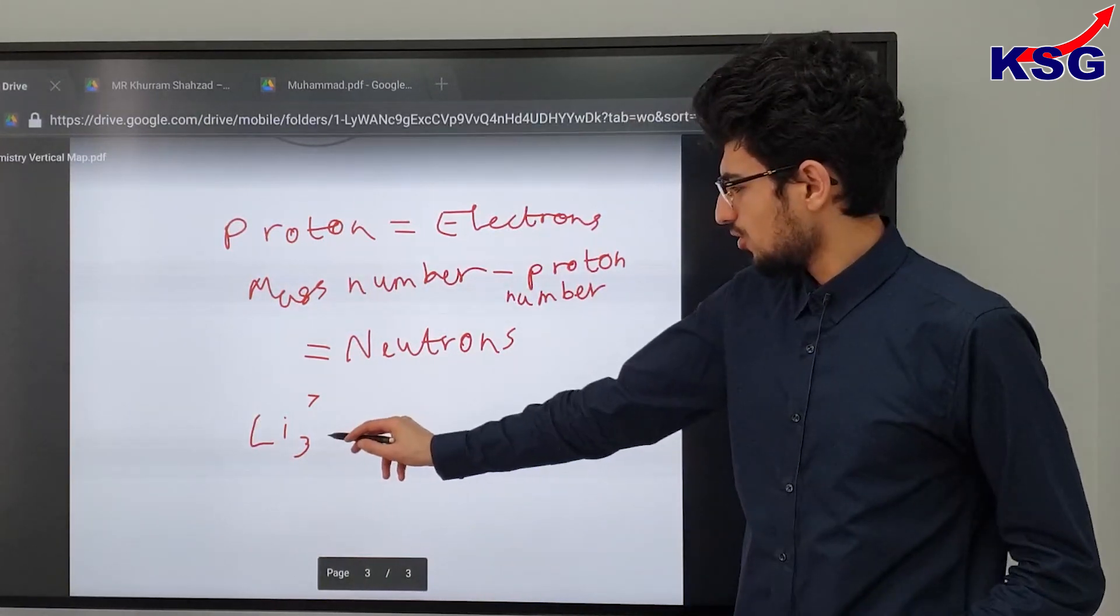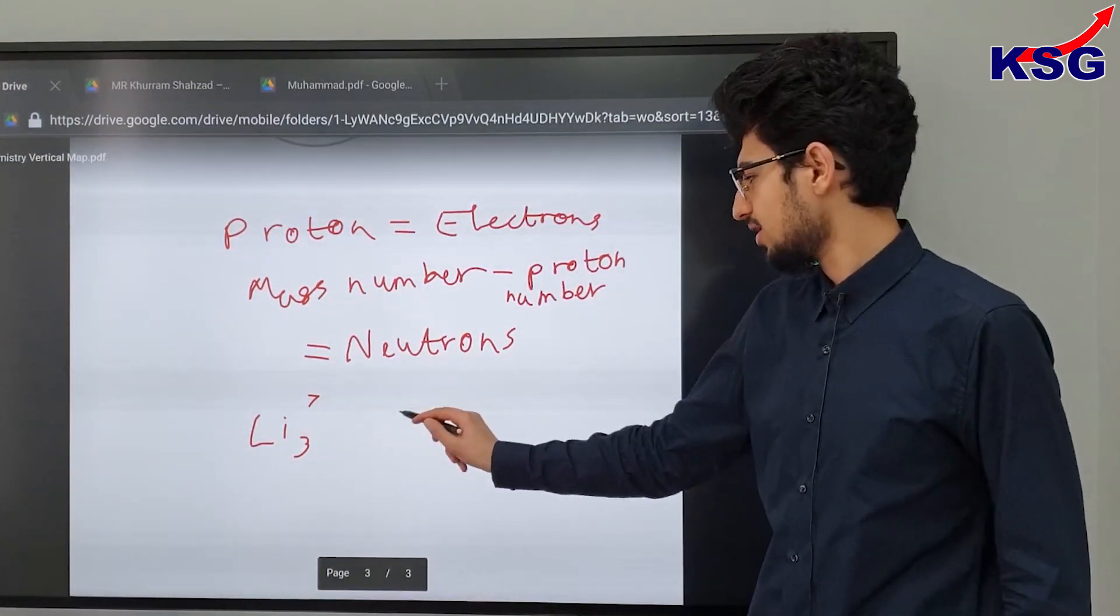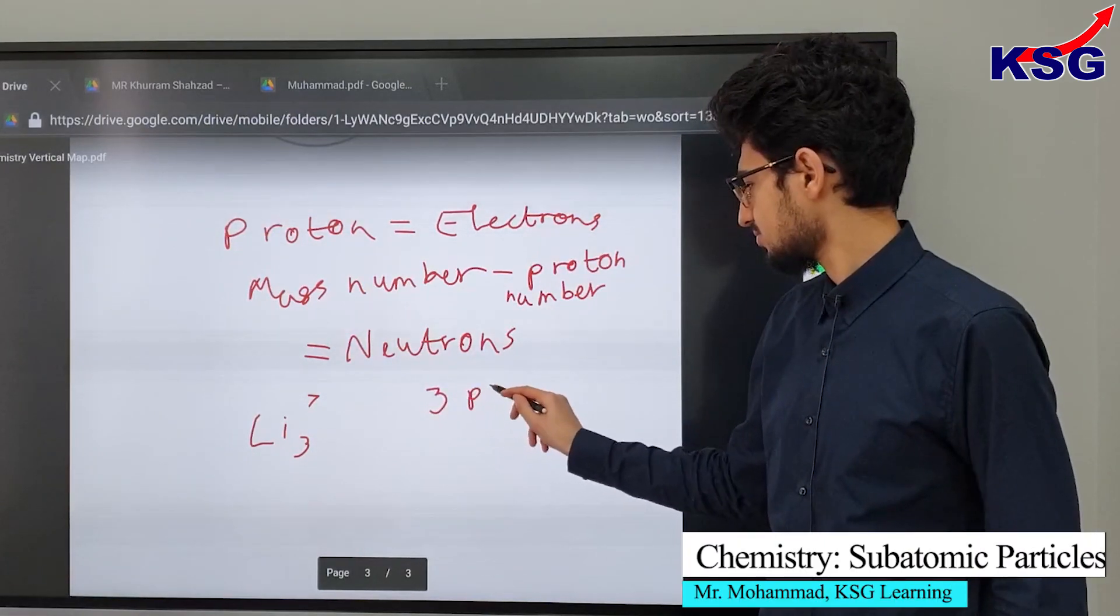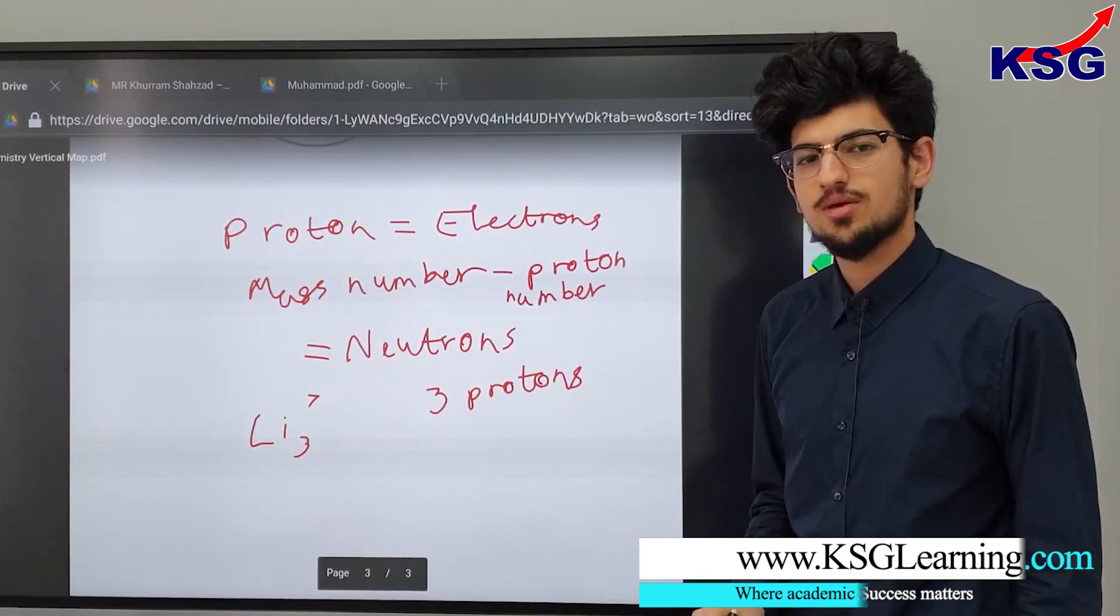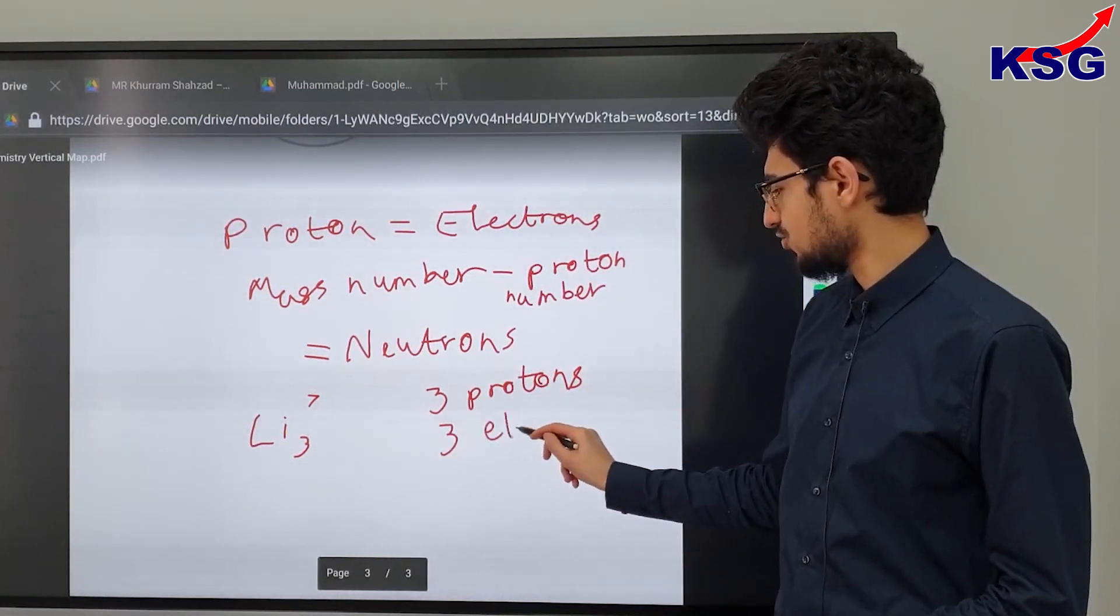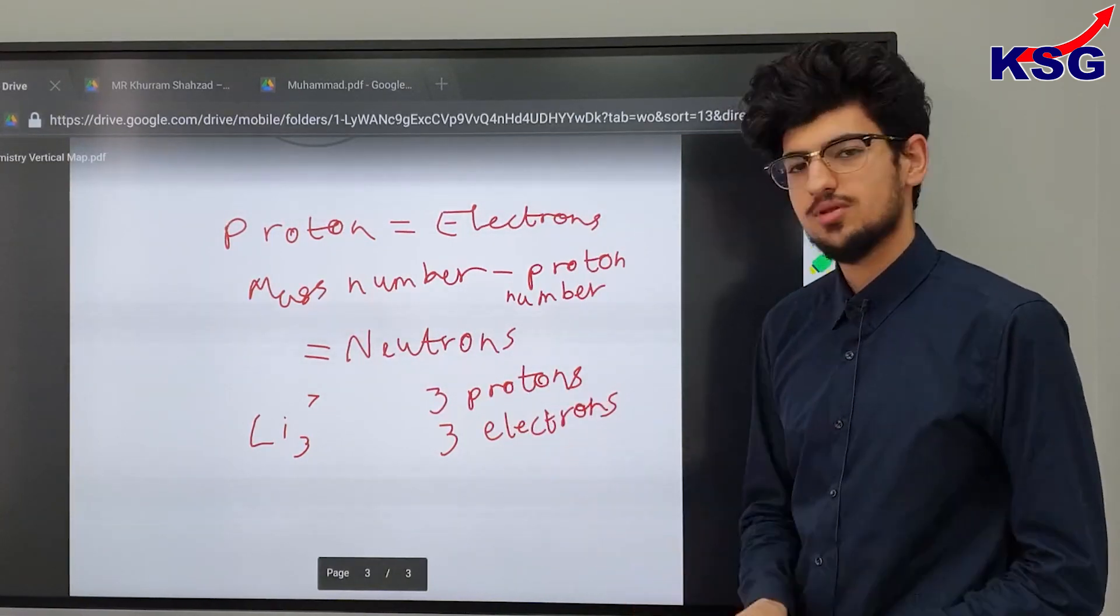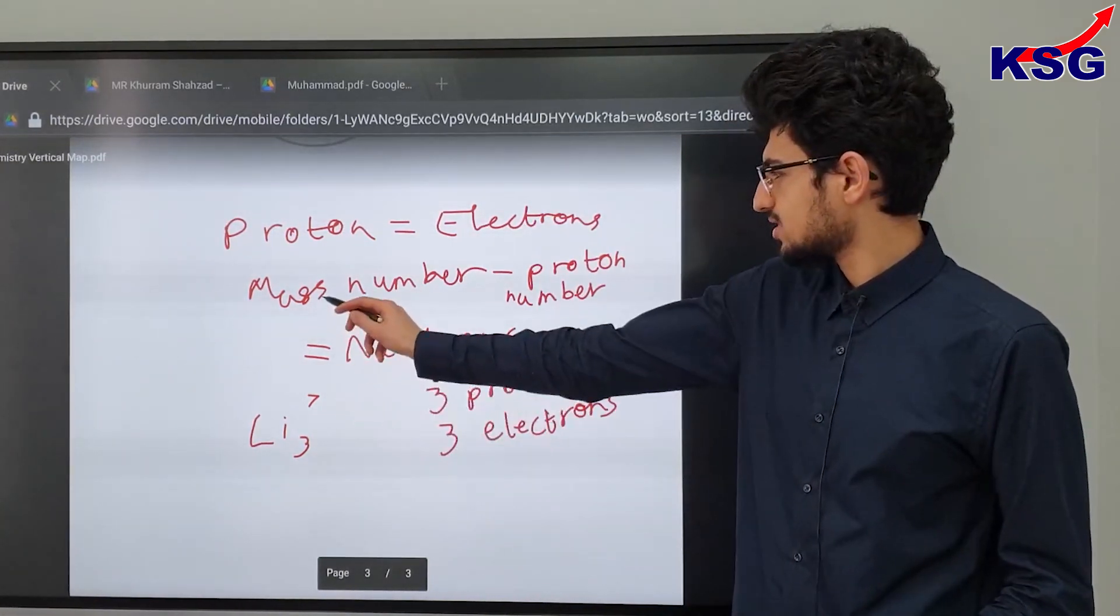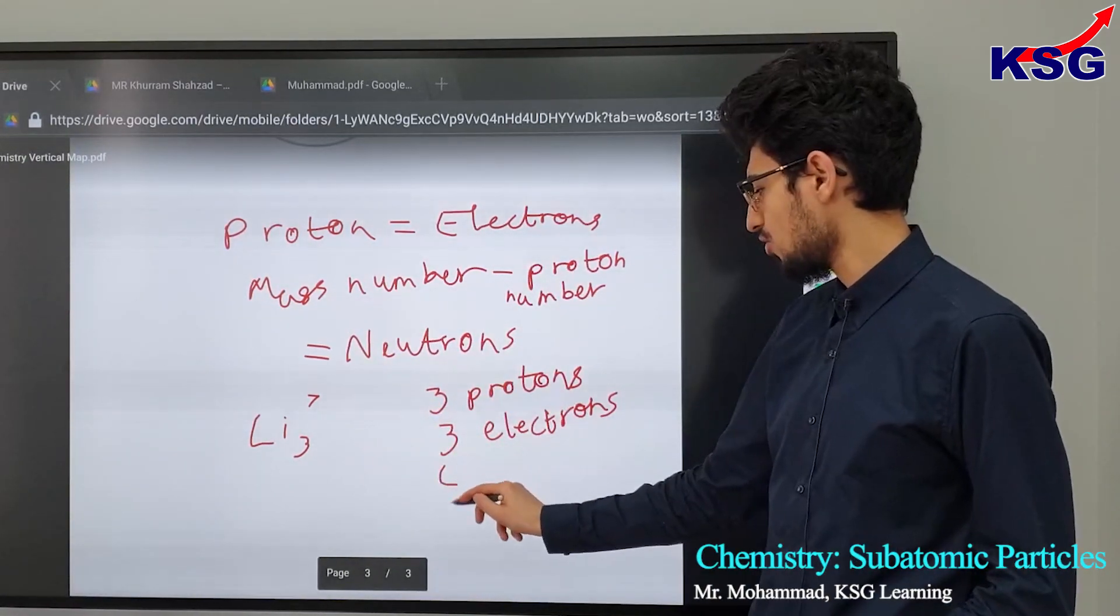Okay, so we can see here that the proton number is three, and therefore there must be three protons. We can also see that because it's an atom, it must also be three electrons. And finally, seven, which is the mass number, minus three, which is the proton number, gives us four neutrons.